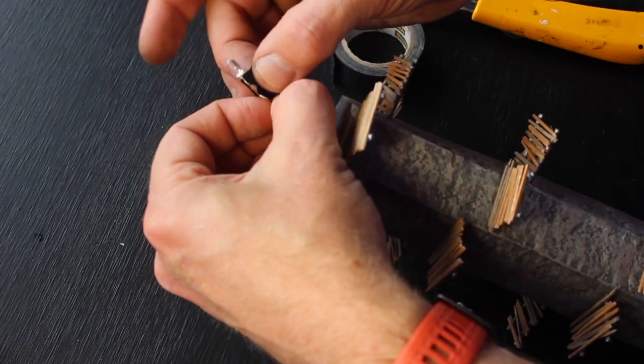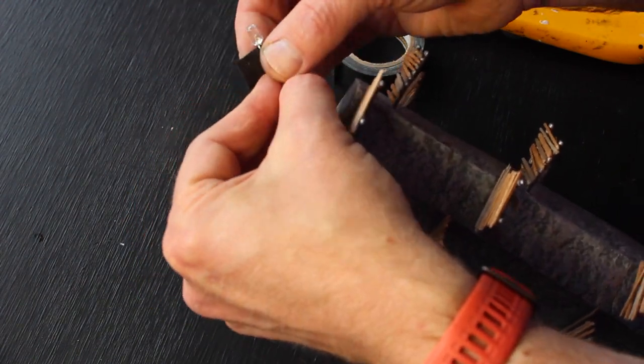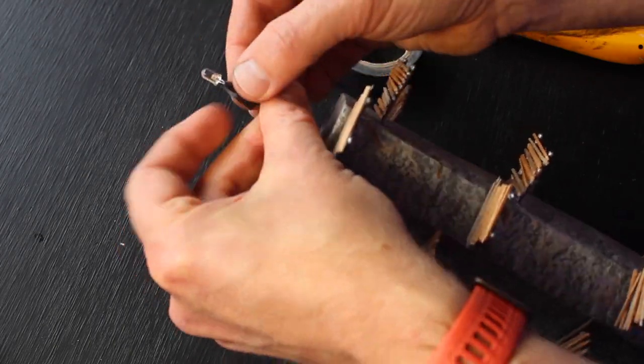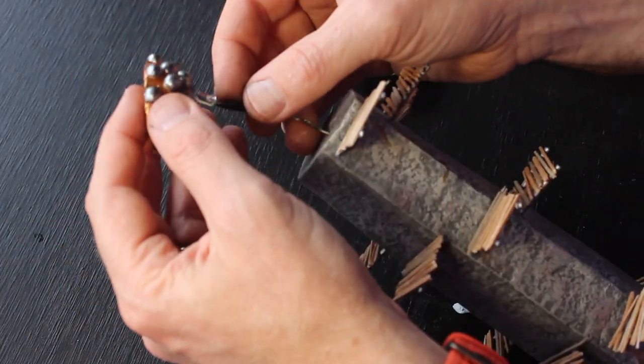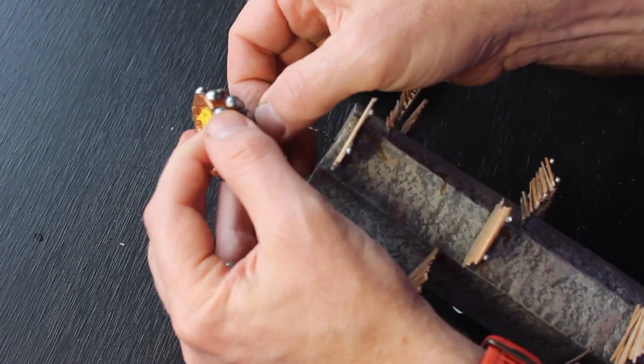I covered the leads of the LED with electrical tape to keep them from shorting out. This will be very important as I will not be able to fix a short later. The entire apparatus will be covered in hot glue.